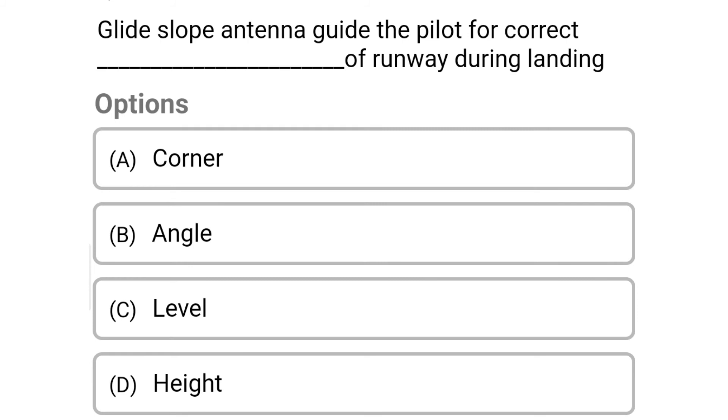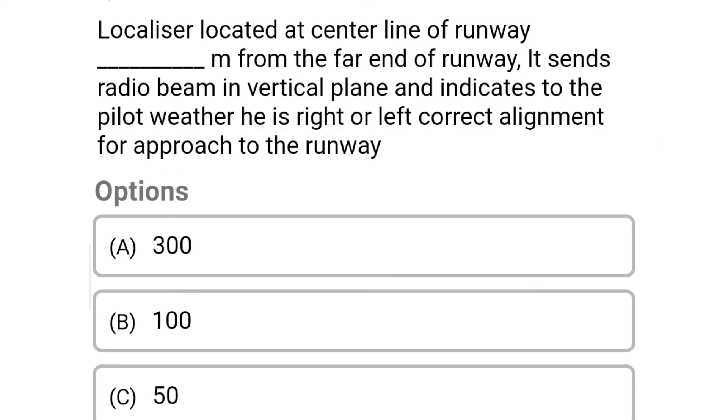Next question: glide slope antenna guides the pilot for the correct dash of the runway during landing — option A corner, option B angle, option C level, option D height. The correct answer is option B angle.